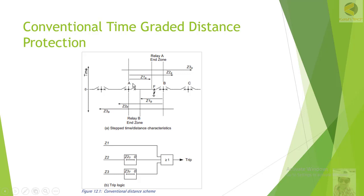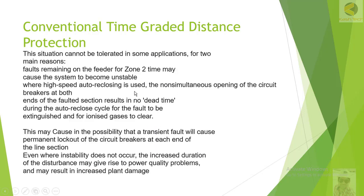If one breaker opens immediately and the second opens with a time delay, the dead time is increased. For example, if the arc is completely extinguished at 100 milliseconds after the first breaker opens, but the Zone 2 time delay is 400 milliseconds, we are keeping the arc fed for 300 to 400 milliseconds unnecessarily. This delays auto-reclosing and delays restoration of system stability. This is another reason we do not want to accept this condition.